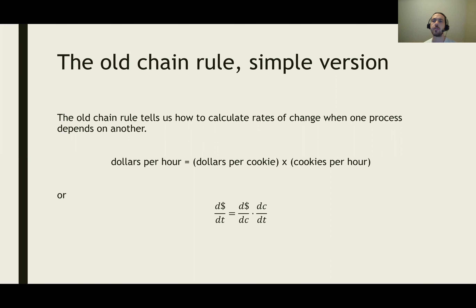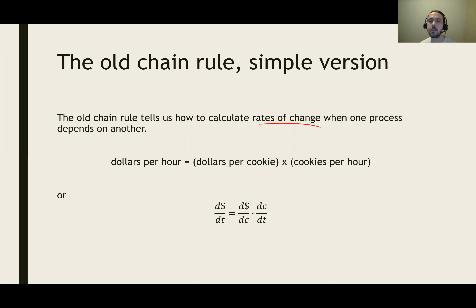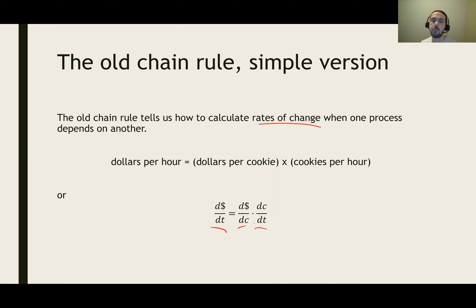Let's remember a little bit about the old chain rule from ordinary single variable calculus. The chain rule tells us how to calculate rates of change when one input goes through an intermediate process before it becomes an output. For example, if you are producing cookies and converting them into money, that depends on how fast you produce the cookies and how much the cookies cost. So if you want to know the rate of change of money with respect to time, you have to make use of the rate of change of the cookies. It depends on your production process and also how much those cookies make for you in terms of money. And you just multiply those two processes together.